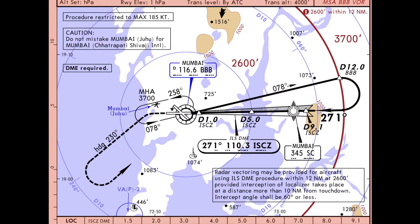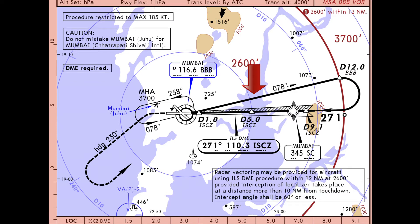The next section of the chart is the plan view of the approach. It shows the basic geography of the location. Here you can see that the airport is located near a coastline area. The thin black lines show the holding at the VOR, with the VOR frequency mentioned here. The bold black lines represent the approach segment, and the ILS frequency is mentioned here as well. The dashed black line is the missed approach segment, as already discussed.